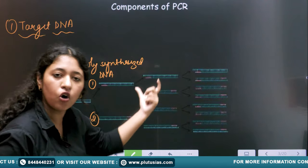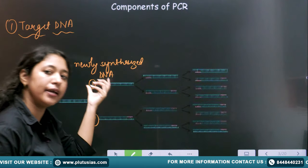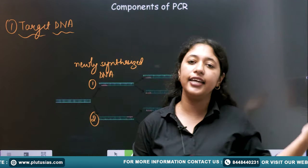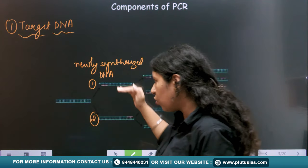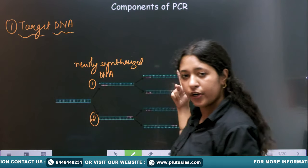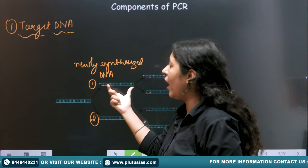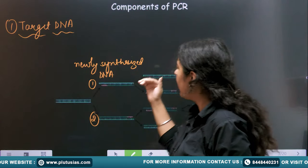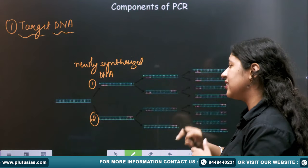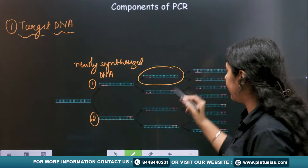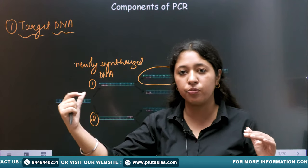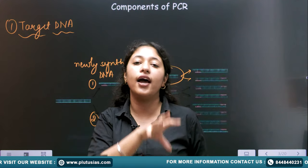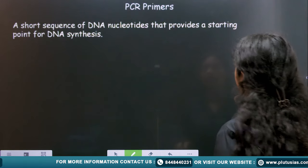These two copies will further produce more DNA — they will act as a target or template strand for the other DNA which has to be produced. This will also produce further copies. Because this reaction is happening in a chain process, in a regulatory process, that is why it is known as Polymerase Chain Reaction.